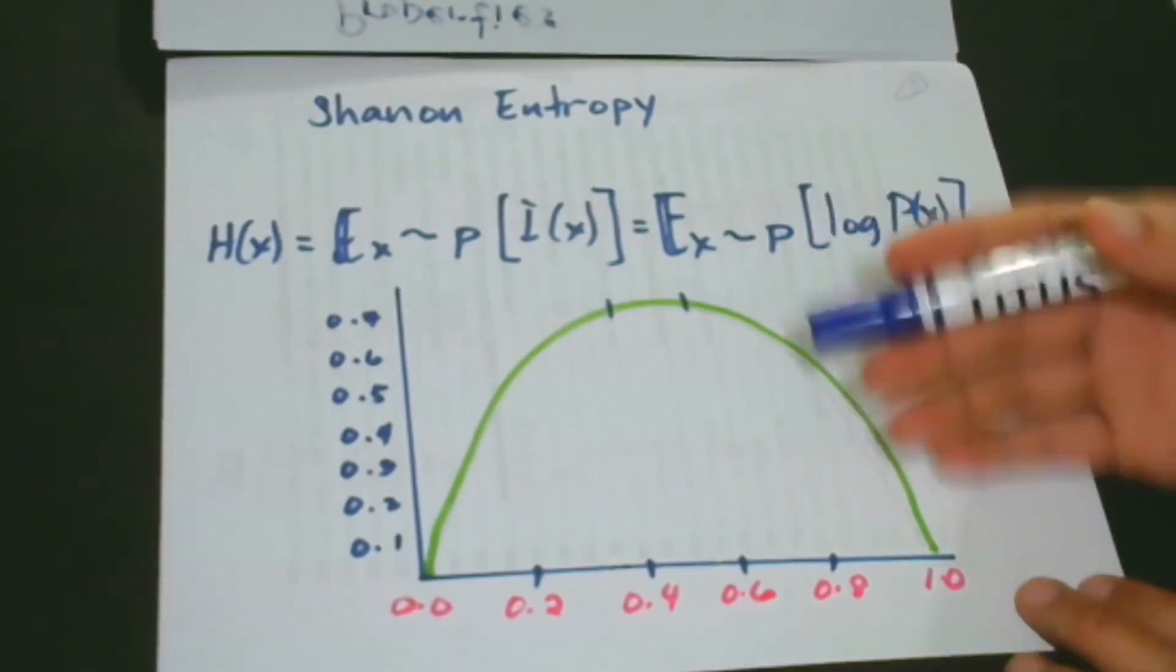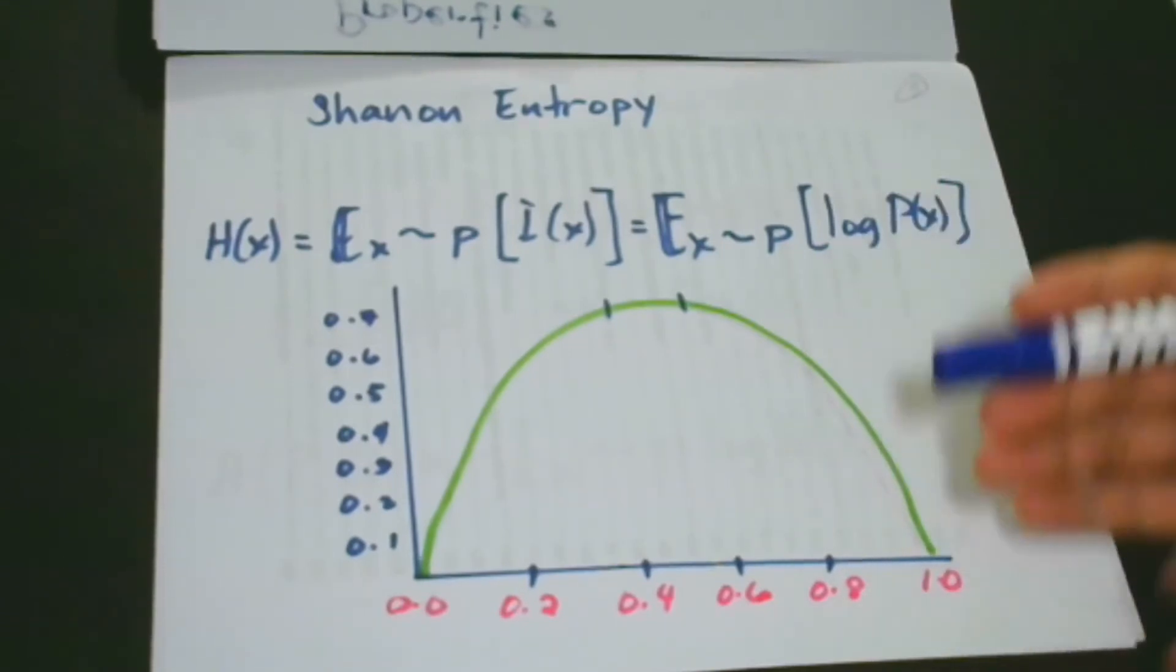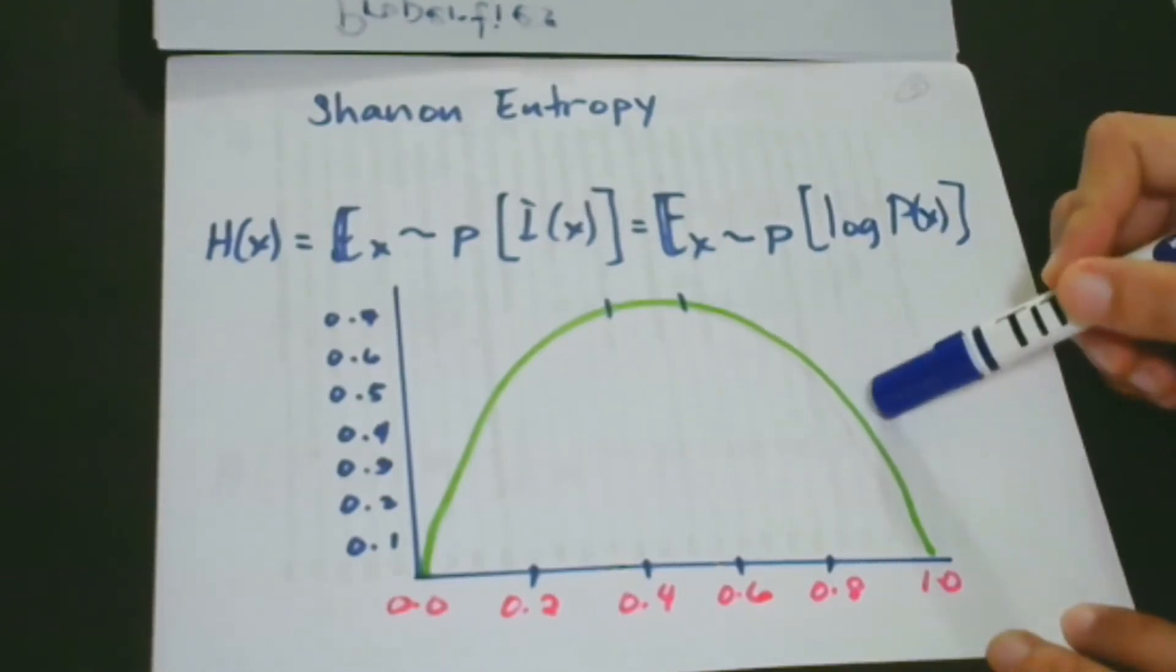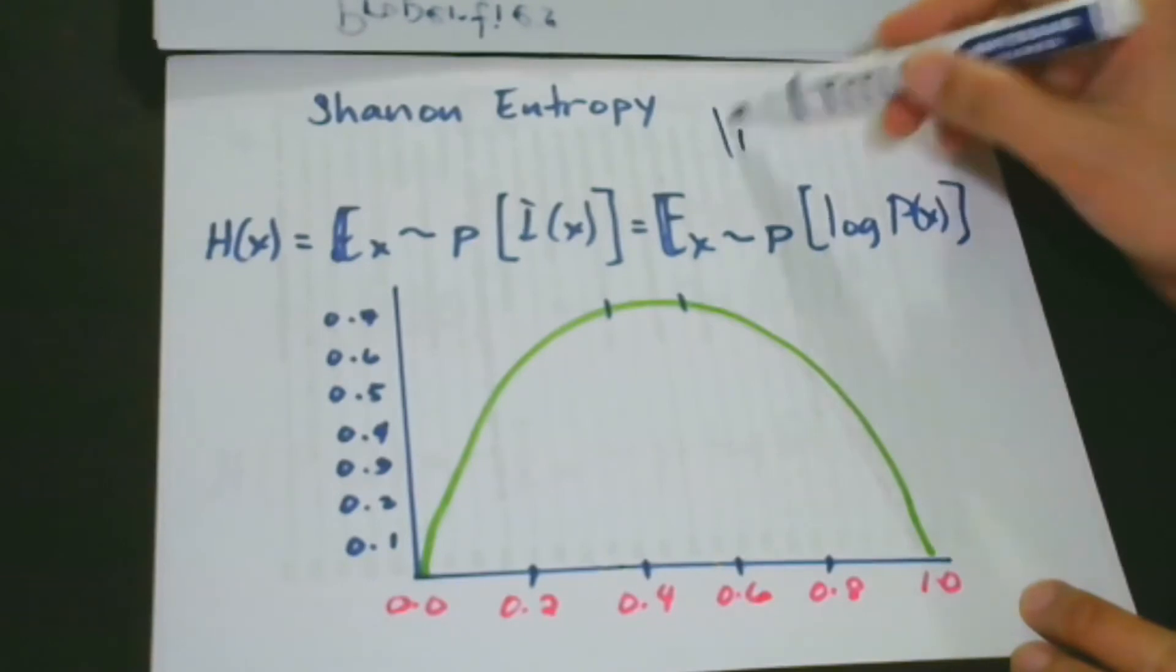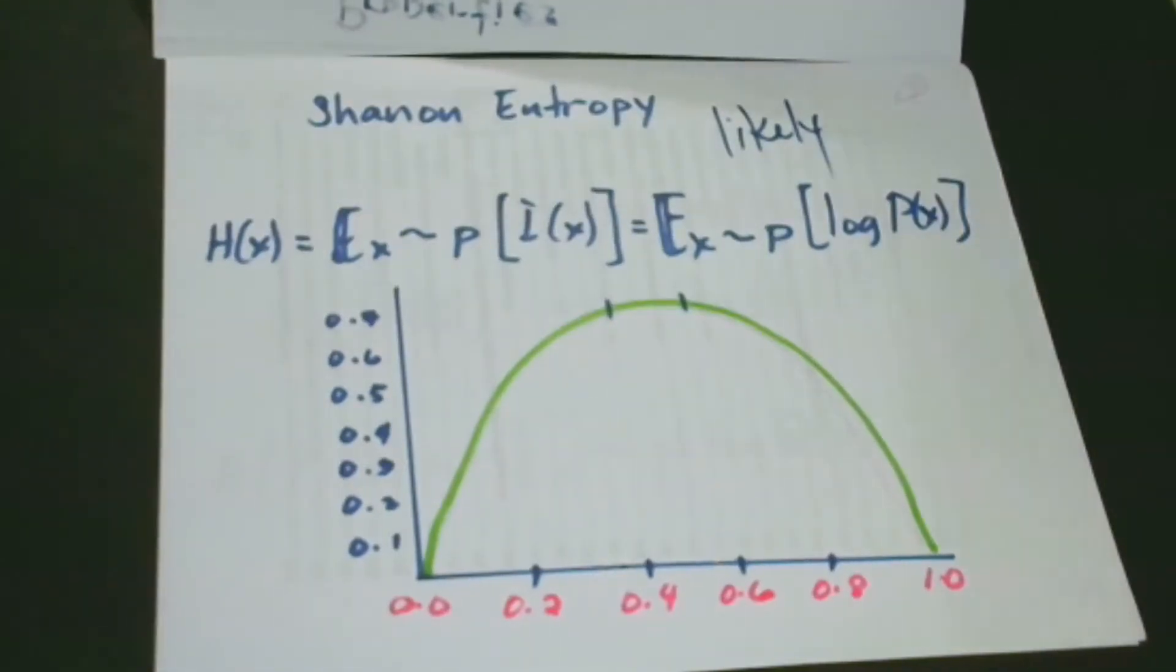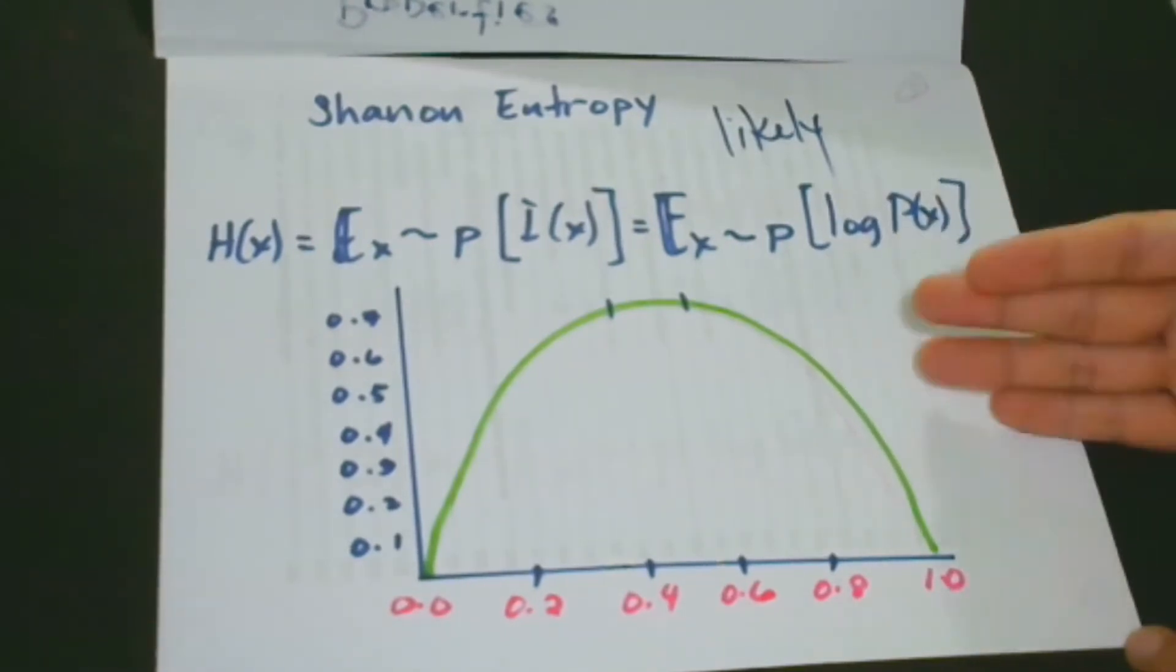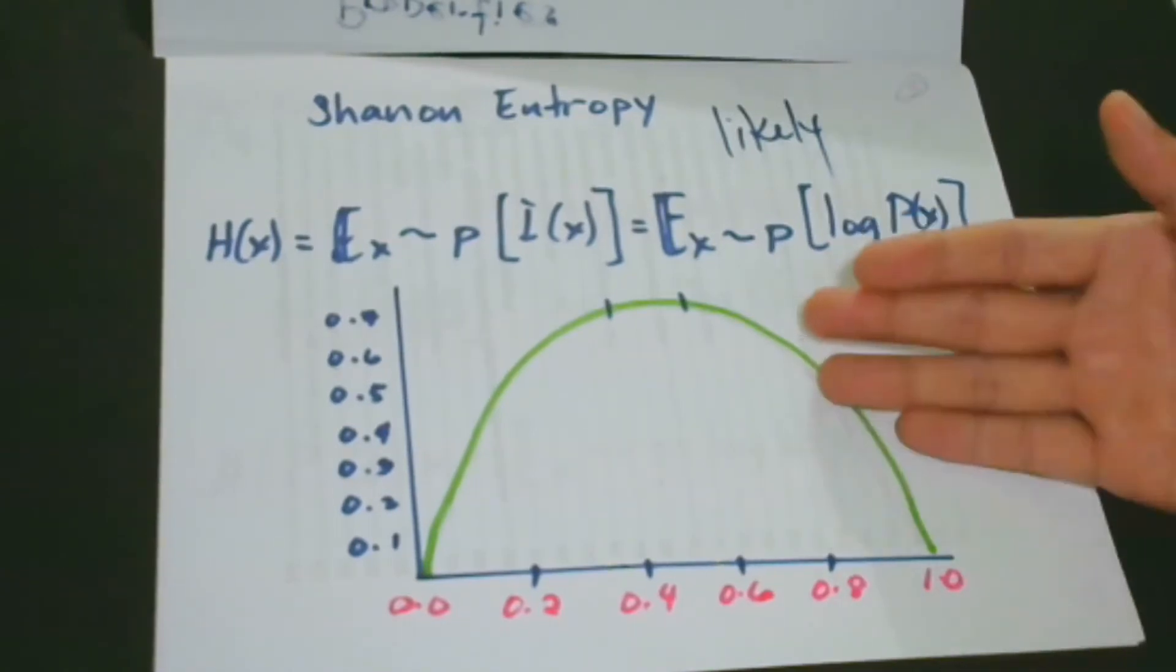So a Shannon entropy of a distribution is the expected amount of information in an event drawn from a certain distribution. So in this case, when an event is nearly deterministic, let me repeat that, when an event is nearly deterministic or you know exactly what is going to happen or what is not going to happen, the entropy is low. So that falls on likely. Remember the first property? Let me go back for a while. The first property is likely. So this contains low information. When it is closer to normal, which means it is somewhat 50% chance of happening and 50% chance of not happening, then the information that may contain is high.